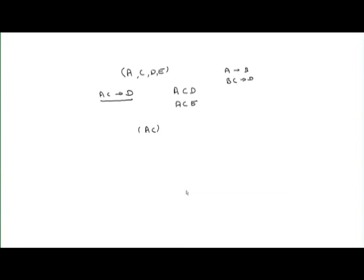Is class1 in BCNF? Building and room number determine capacity, but is (building, room number) a super key of class1? No, it is not. So we need to decompose again. Using building, room number → capacity, we get the classroom relation (building, room number, capacity) and the section relation (course ID, section ID, semester, year, building, room number, time slot ID). That is exactly the section relation from our original schema. So now we have a decomposed result that is in BCNF — course, classroom, and section.